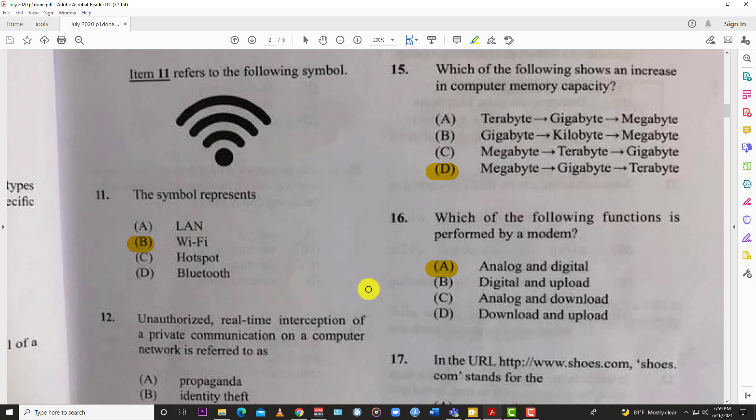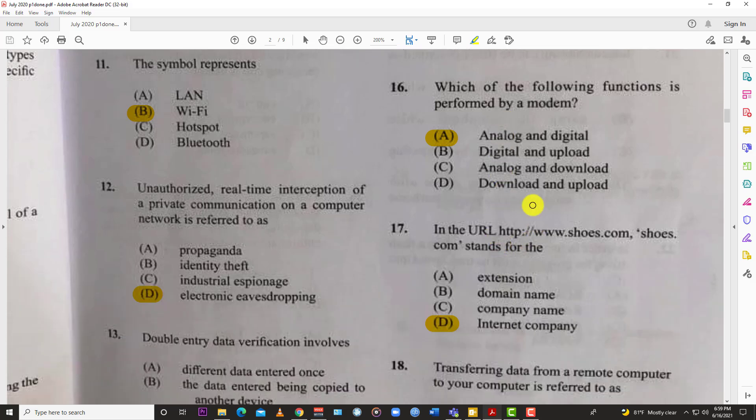Number sixteen: which of the following functions is performed by a modem? Best answer is A, analog and digital. It needs to get analog signal and turn it digital. That's why you see a lot of modems have coaxial cables that are still kind of analog, and that goes into the modem, and then the modem spits out a digital signal that your computer can access and your phones can pick up.